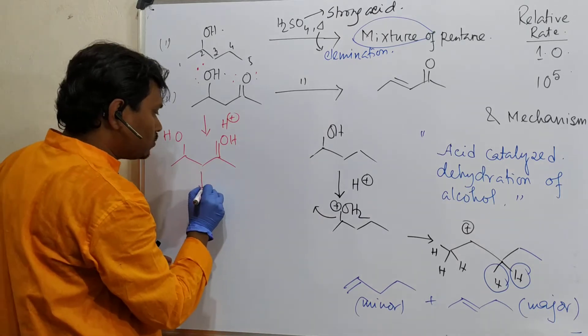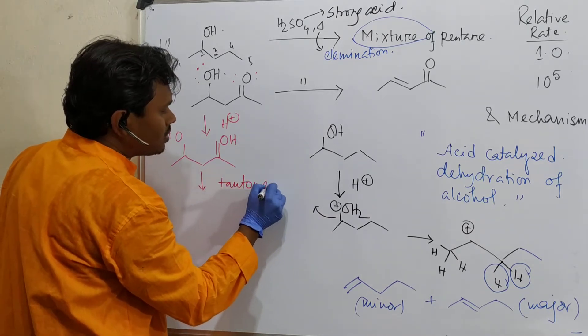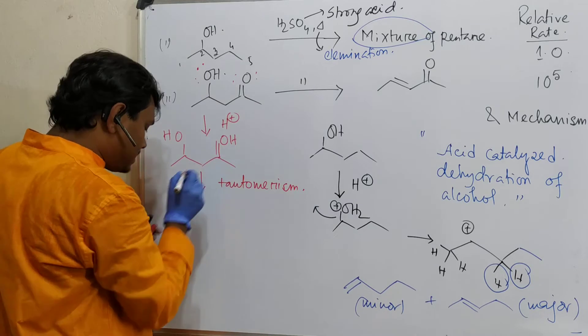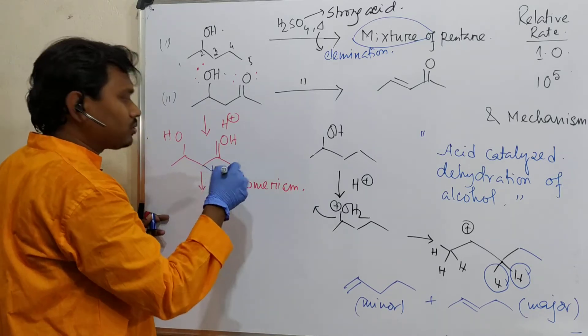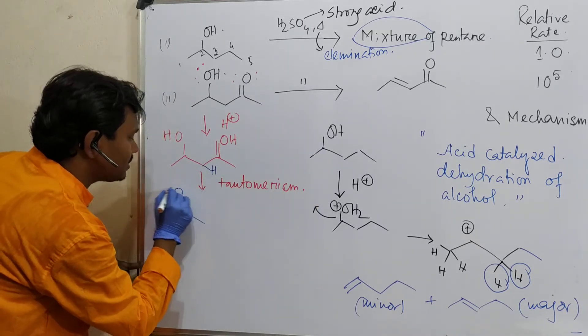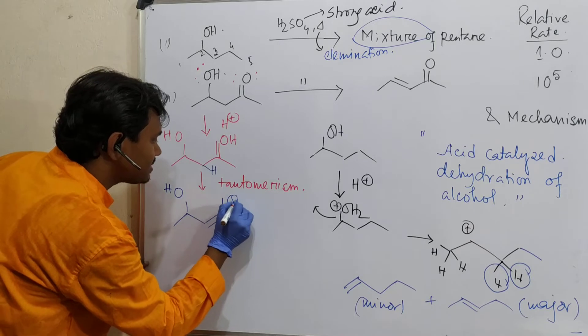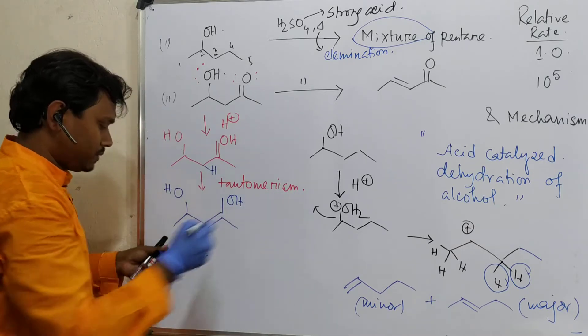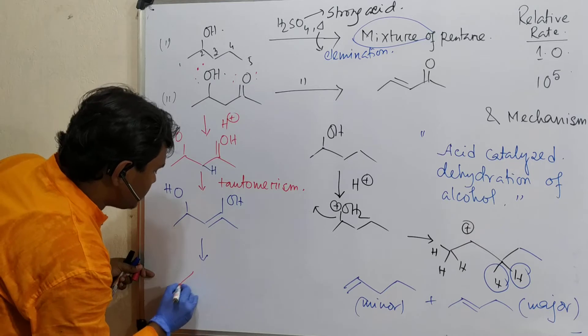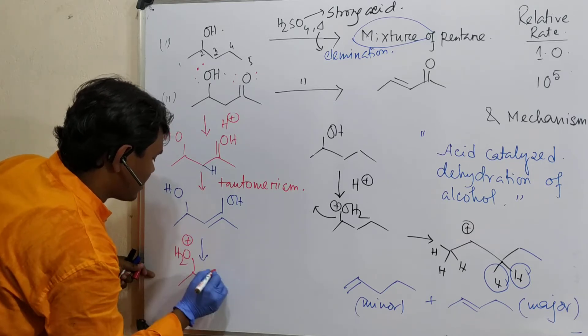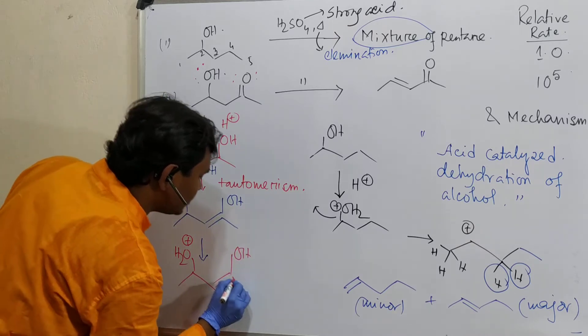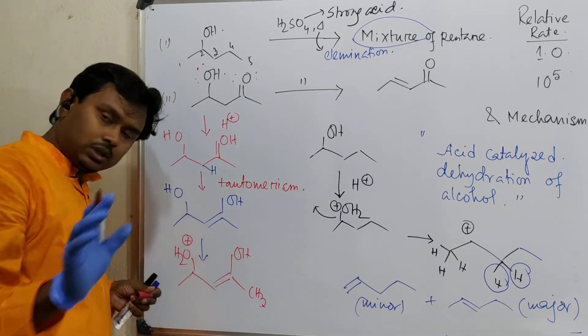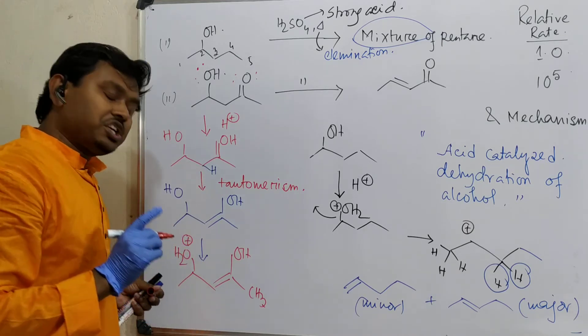And it can undergo tautomerism - keto-enol tautomerism. So it will be converted into enol. From this position, this proton could be shifted and enol will be produced. Now reaction will follow a course like the previous one. Protonation is expected to happen on this carbonyl. Now you may think, why not the other one? Why not here?